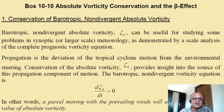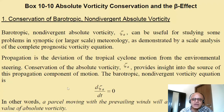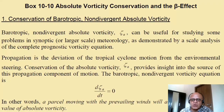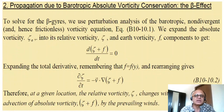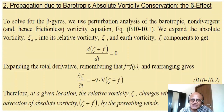We need to explain why the cyclone moves more than expected just from the steering winds. The barotropic non-divergent vorticity equation uses zeta plus f, giving d(zeta_a)/dt = 0. This is Lagrangian — a parcel moving with the prevailing winds will always have the same value of absolute vorticity, with no friction generating or destroying vorticity. This propagation due to absolute vorticity conservation is the beta effect.